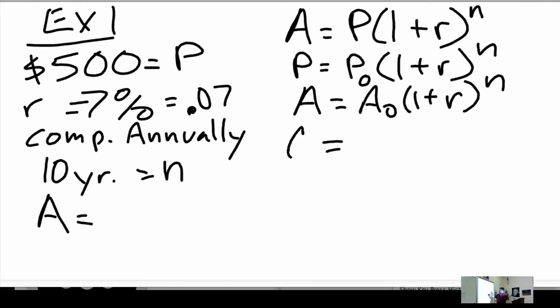So, I'm looking for A. And A is equal to 500 times the quantity 1 plus the rate, which is .07, raised to the 10. Does that make sense?